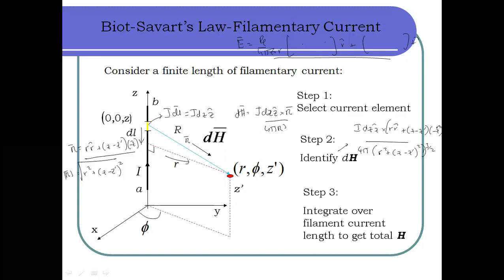Once we have DH, we need to integrate. Step 3 is the integration of DH from point A to point B to find the total H field intensity. So to summarize: Step 1 — select the current element; Step 2 — calculate DH; Step 3 — obtain the total H by integrating DH.